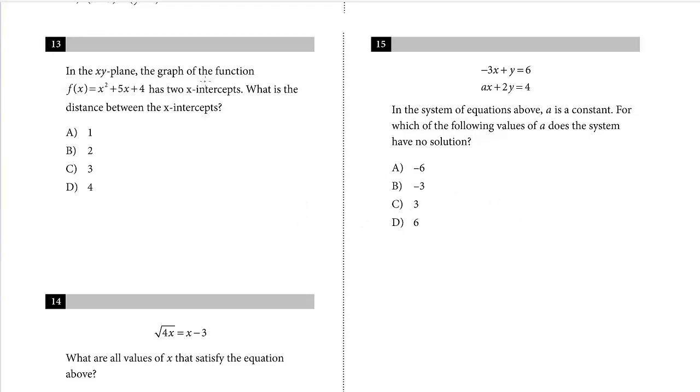Question 13. In the xy-plane, the graph of the function f(x) = x² + 5x + 4 has two x-intercepts. What's the distance between the x-intercepts? So this is a parabola in standard form. The x-intercepts, that's where the parabola intersects with the x-axis, the solutions. We have to find the distance. So how do we find the two solutions? We can just factor it. It's in standard form.